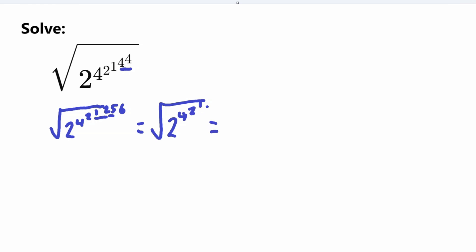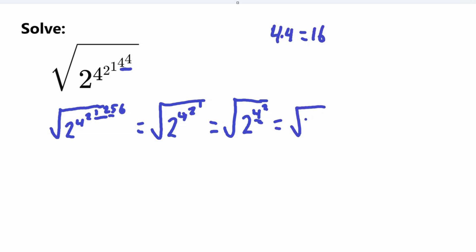Next up is 2 to the power of 1. Anything to the power of 1 is simply equal to that same number, so 2 to the power of 1 just stays 2. So we're almost there. Now we worry about 4 to the power of 2. 4 to the power of 2 is 4 times 4, and that's equal to 16. So now we have 2 to the power of 16.